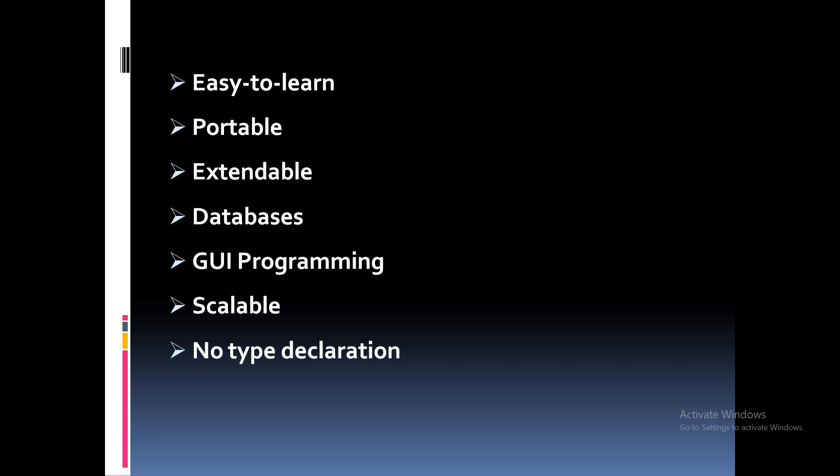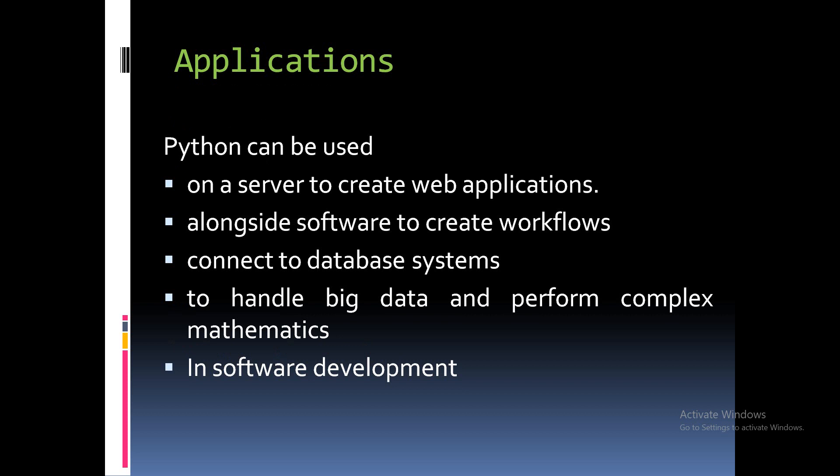These are some of the features — actually Python has a broad number of features. Along with features, let's look at the areas where we apply Python. The main application of Python is in data science. Data science, machine learning, and artificial intelligence use Python. Why? Python has a very large set of libraries — that is, large sets of predefined functions. By using these, we can implement a large program in small code. For example, if a program requires 100 lines of code in C, it may be implemented in about 50 lines in Java, and the same code is implemented in approximately 5 to 10 lines in Python.